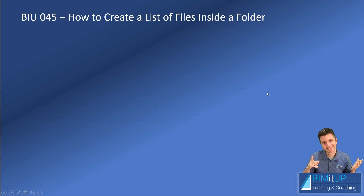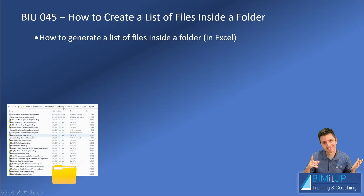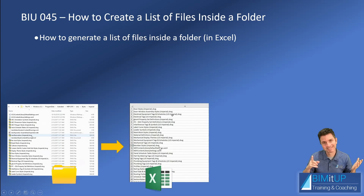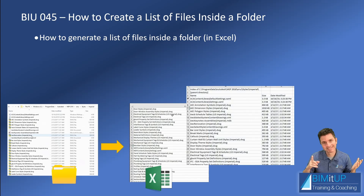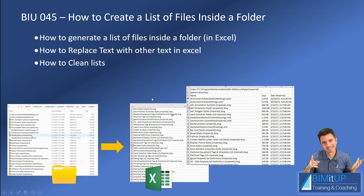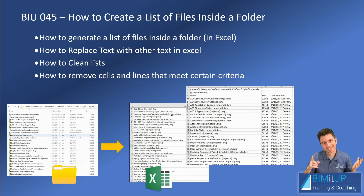Hi everyone, Alex with BIMITUP here. Today I'm going to show you how to create a list of files contained within a folder. We're going to use Excel, but this same procedure can be used in Word. I'll show you how to include additional information like file size or date modified, how to replace text in Excel to clean the list, and how to remove cells and lines that meet certain criteria — for example, removing all cells that contain the word 'Imperial.'